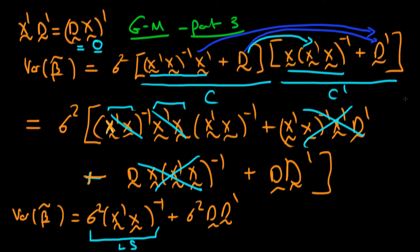What about the second term? We can make some conclusions about it because any matrix times the transpose of that matrix is a positive semi-definite matrix. A positive semi-definite matrix A means that for any vector x, the scalar product x times A times x is always greater than or equal to zero. Because D times D transposed is positive semi-definite, we can think of this second term as the analogue of a scalar number which is greater than or equal to zero.